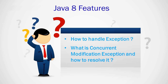ConcurrentModificationException occurs when we are iterating over a list and simultaneously modifying that collection object. To resolve this, we can use an iterator — call list.iterator() and iterate through it — or use concurrent collection classes such as CopyOnWriteArrayList for lists or CopyOnWriteArraySet for sets.